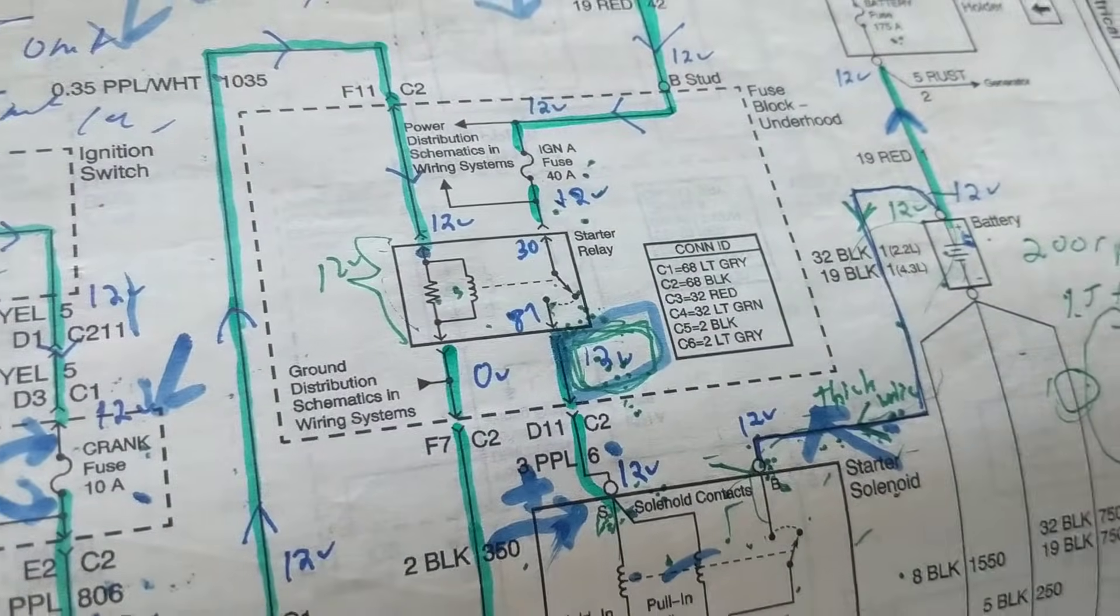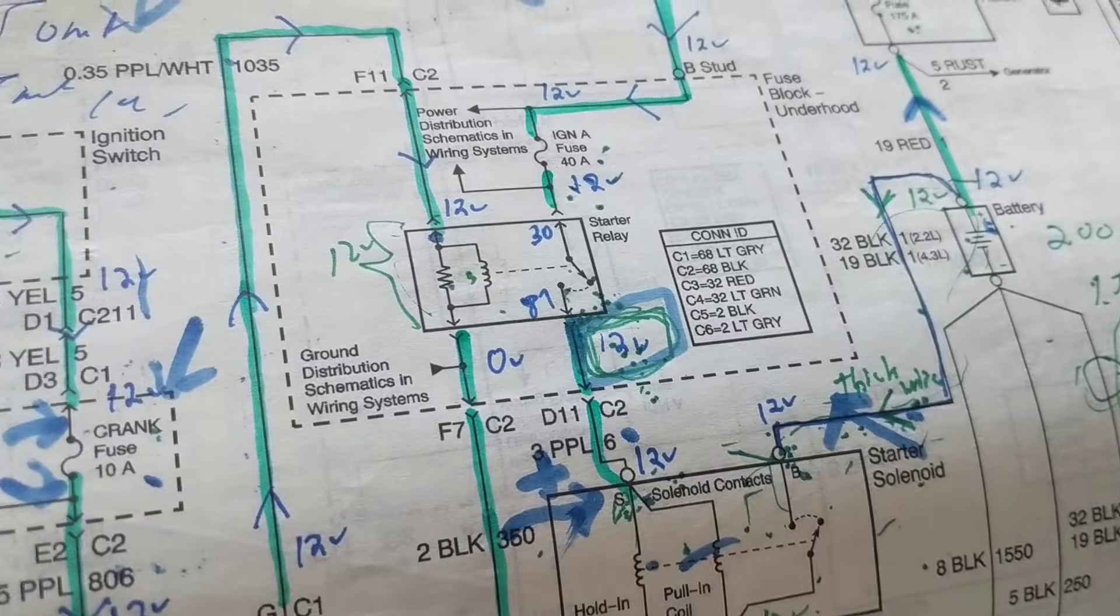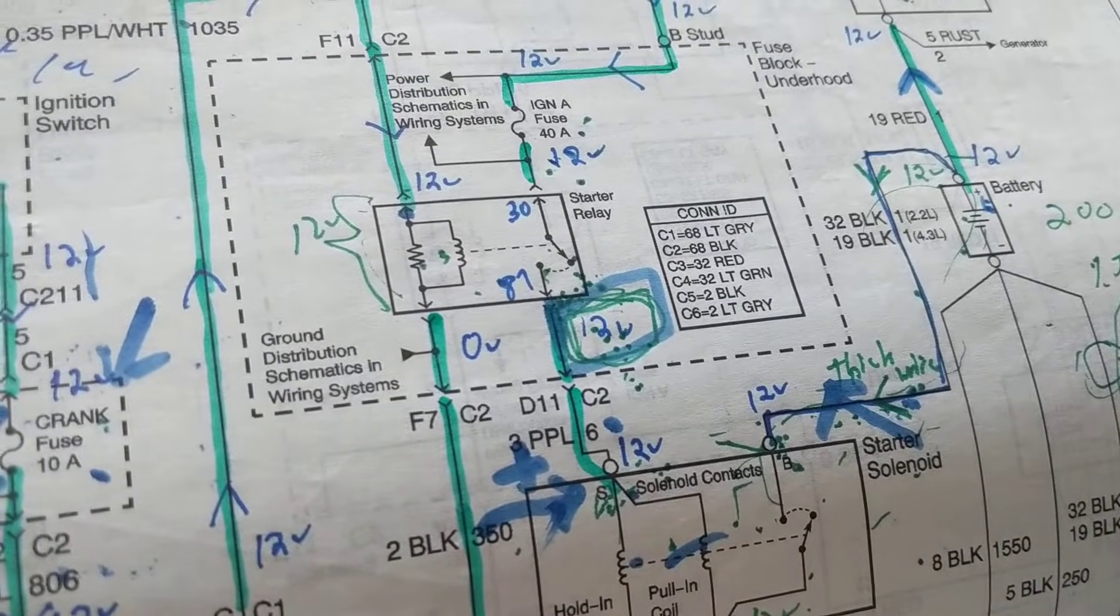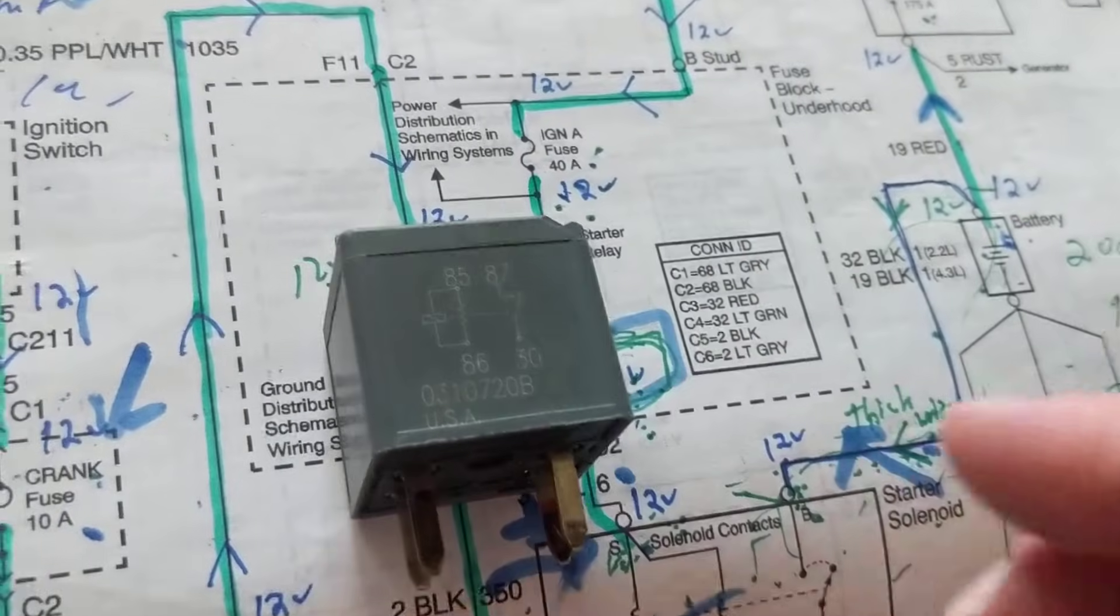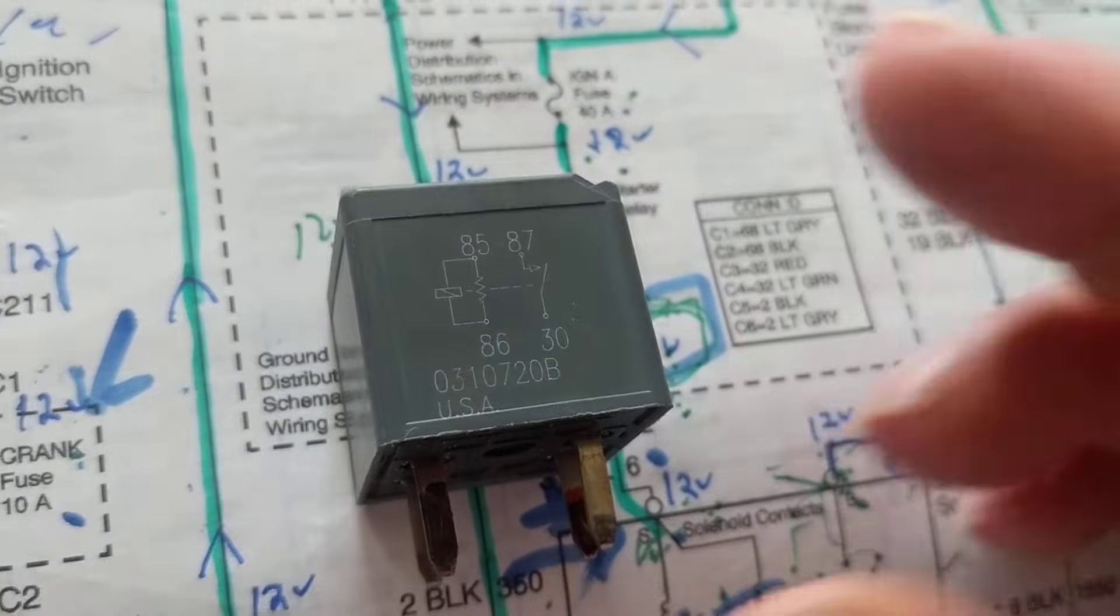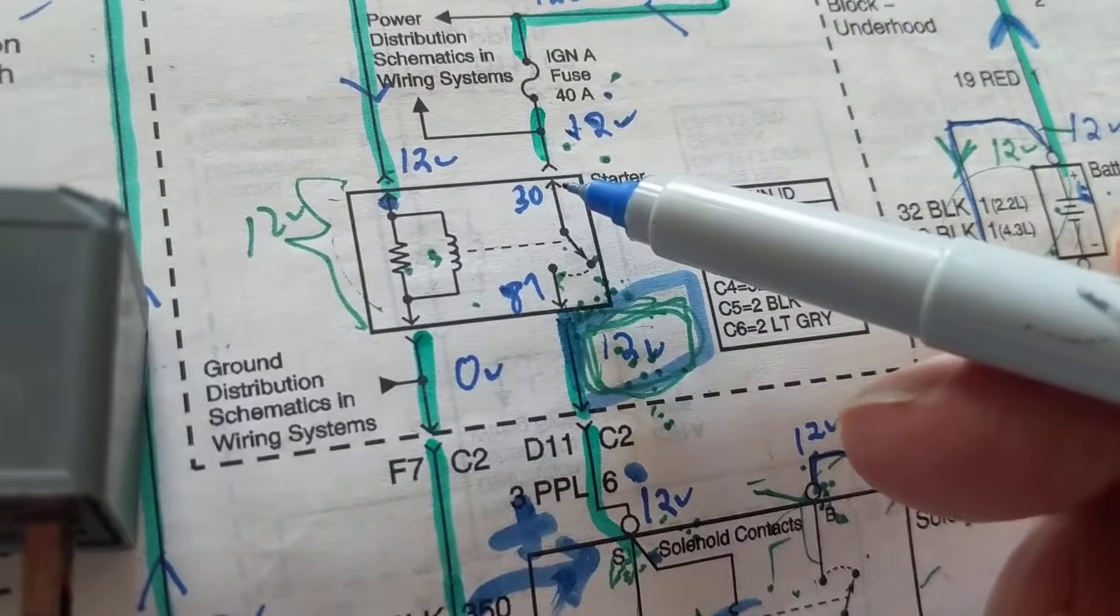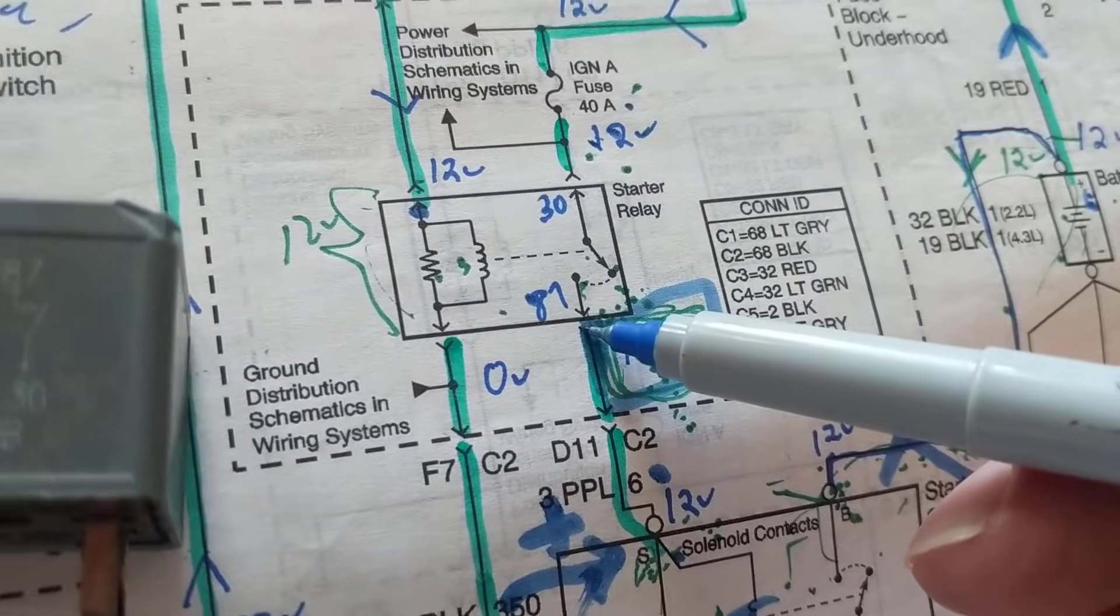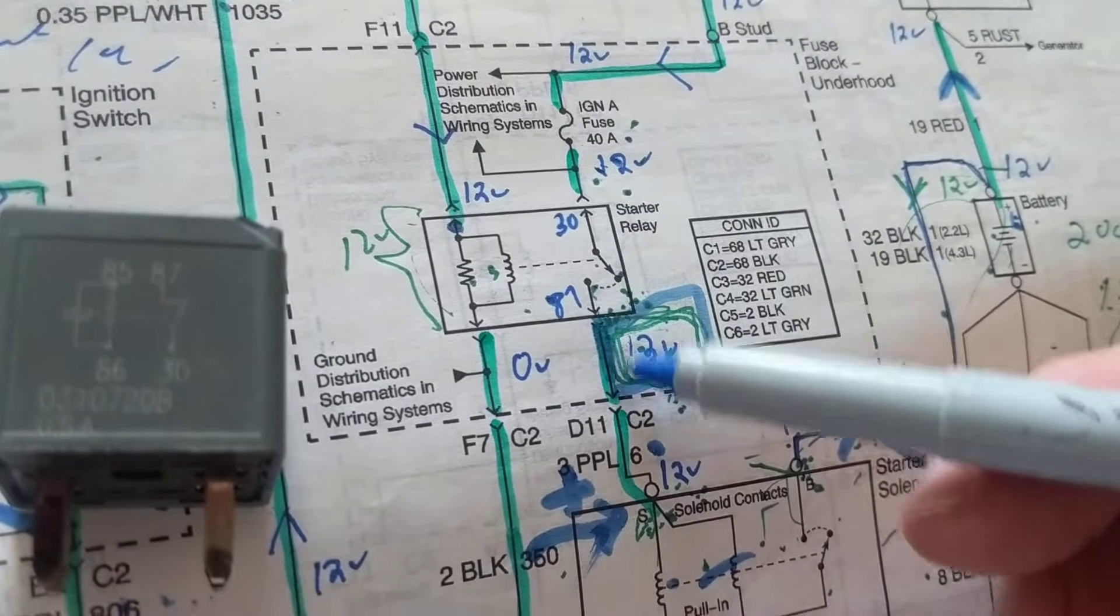But that's not the topic of this video. If you want to jump the relay, as many do, how do you go about it making sure you're correct? We're dealing with two pins, two terminals: 30 and 87.